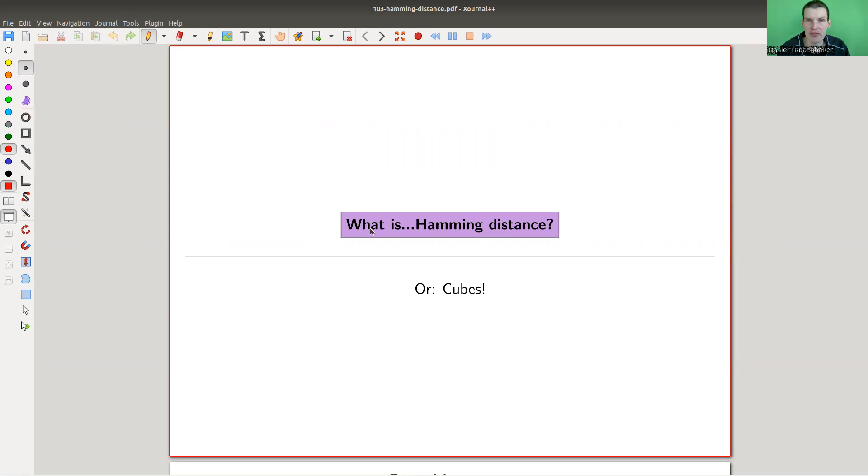Welcome everyone to my continuation of what are my favorite theorems, my very biased collection as usual. Today my very biased collection about cubes. There won't be too many cubes - there will be a cube actually and there will be a theorem, but it's mostly about the philosophy behind Hamming distance, which is quite a general approach, works in quite some generality, but is most important in form of error detection for sending messages from let's say one computer to another.